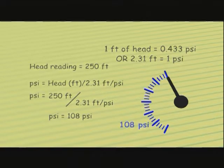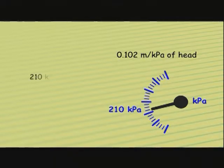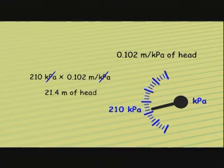To determine head in metric units, we need to know that there are 0.102 meters per kilopascal of head. Therefore, if we have a pressure gauge reading of 210 kilopascals, we take 210 kilopascals times 0.102 meters per kilopascal. The units cancel out, resulting in an answer of 21.4 meters of head.